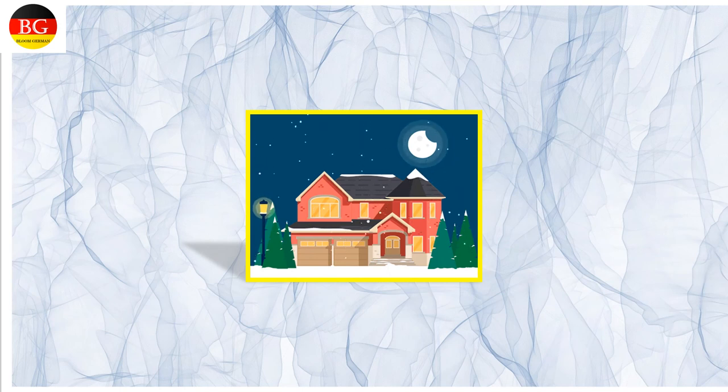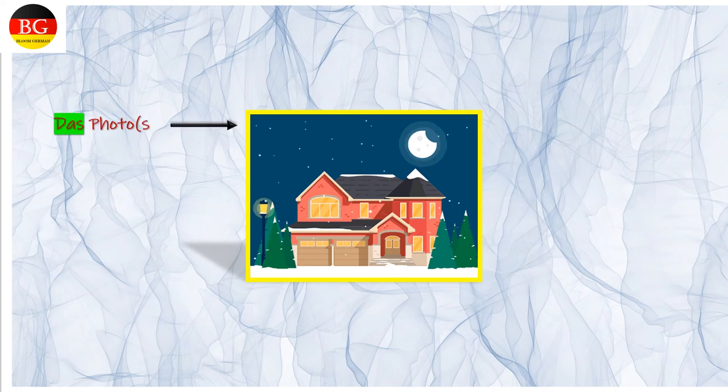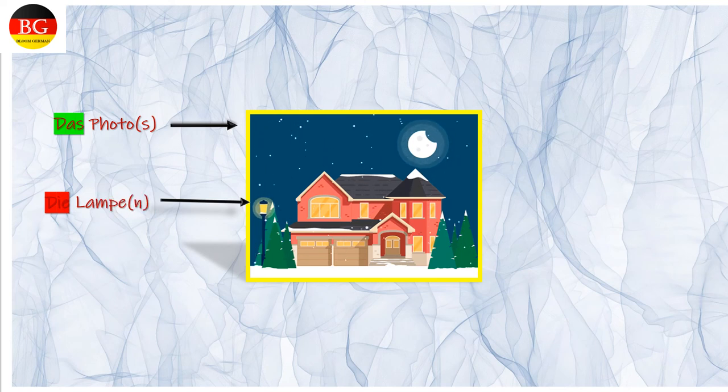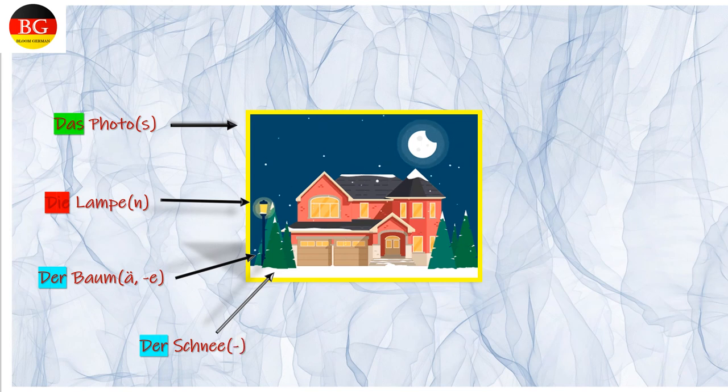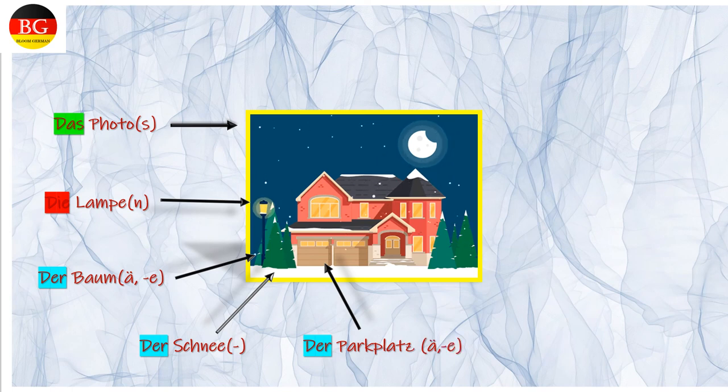Let's see the objects in this photo one by one in German. Das Foto, die Fotos. Die Lampe, die Lampen. Der Baum, die Bäume. Der Schnee, die Schnee. Der Parkplatz—this is a compound noun, so the changes will happen in the second noun, as we have discussed in our previous video. So, plural for this noun is die Parkplätze.